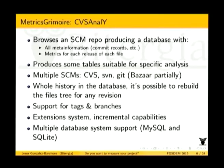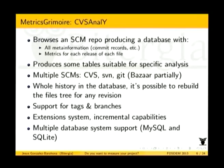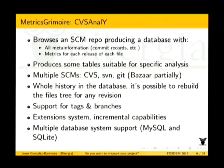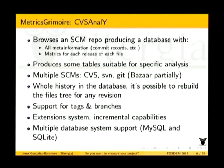CVSAnaly supports mainly CVS, Subversion, and Git; Bazaar is partly supported. Writing a new backend is not that difficult — if someone is interested in completing the Bazaar backend or building one for Mercurial, that would be great. It stores the whole history of the project in the database once downloaded, so you don't need the repository anymore. It has support for tags, branches, and all the stuff in source code management repositories, plus an extension system to add specialized functions. Right now it supports MySQL and SQLite.